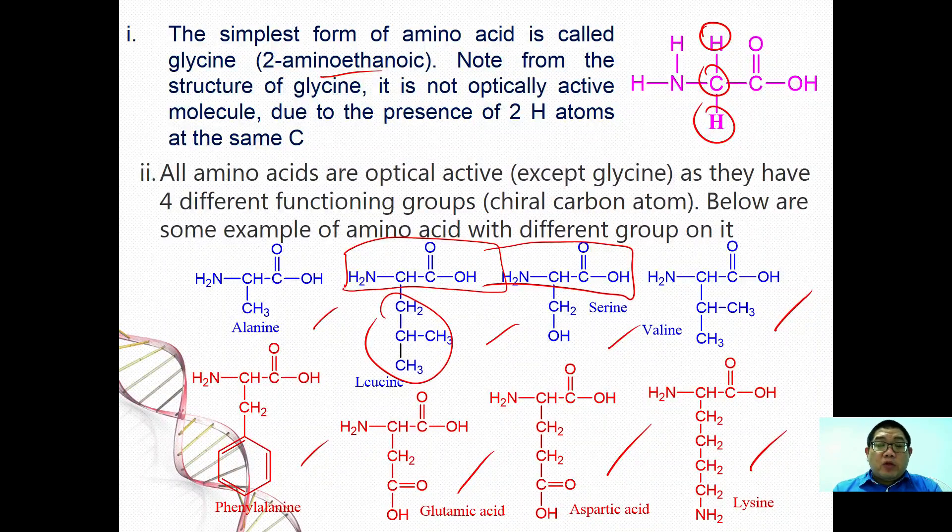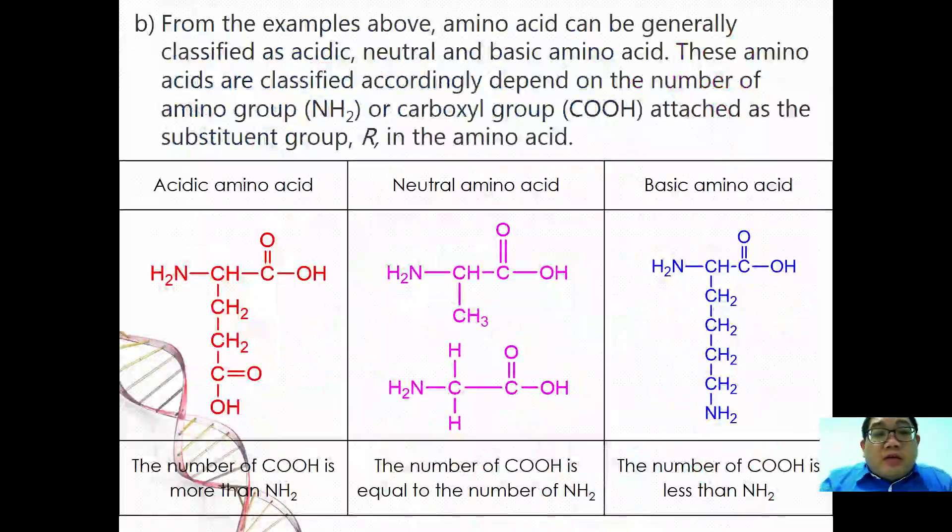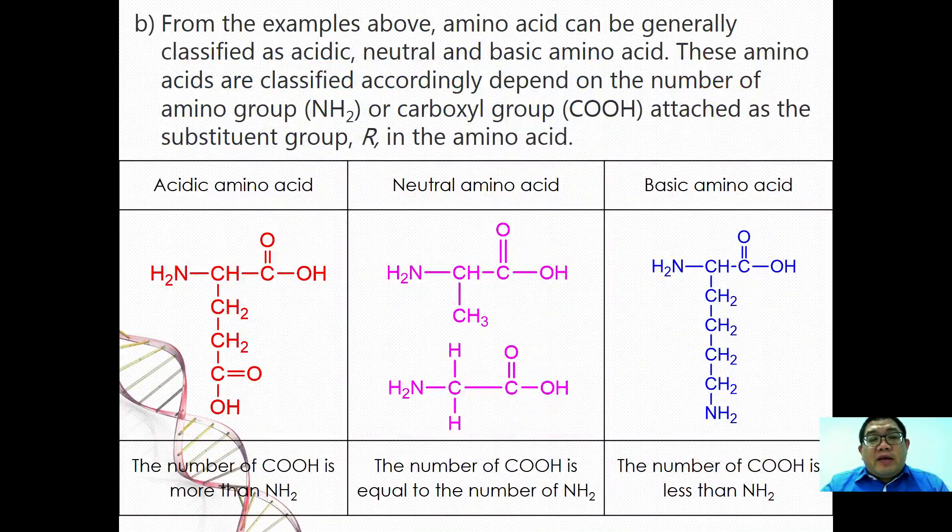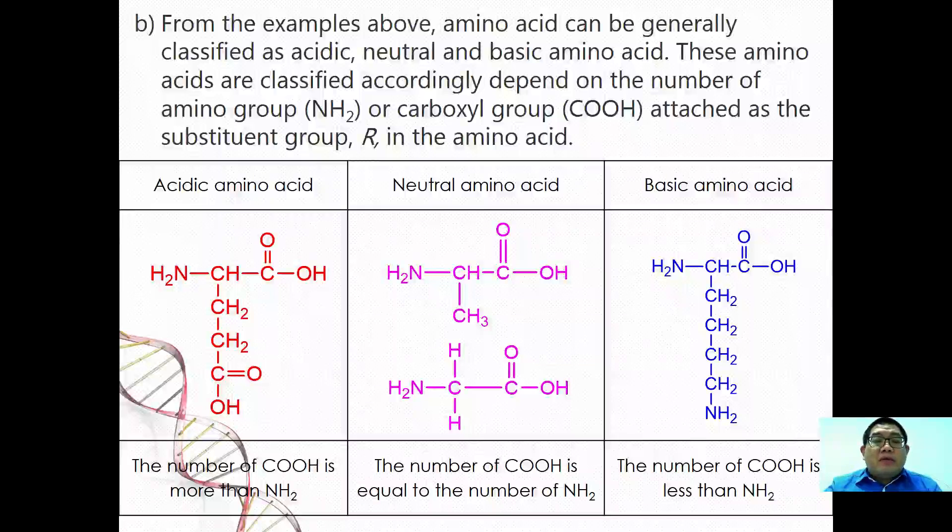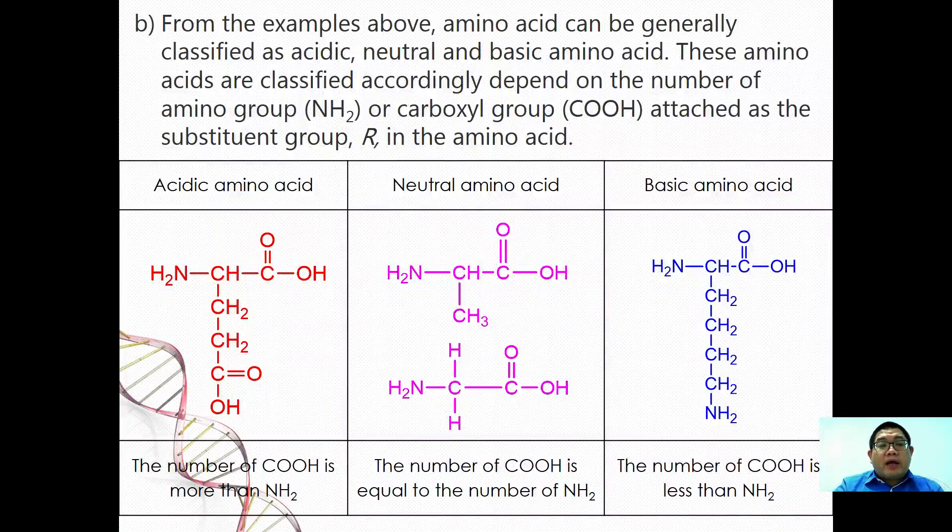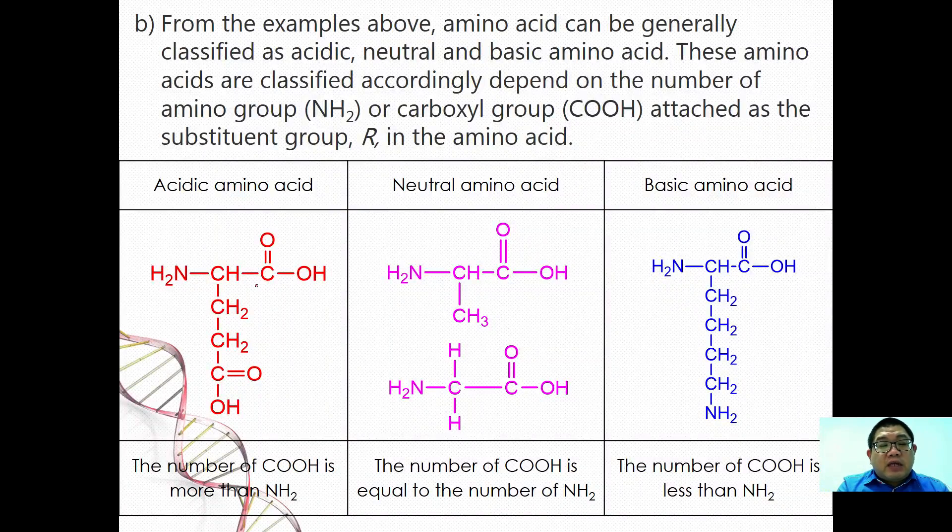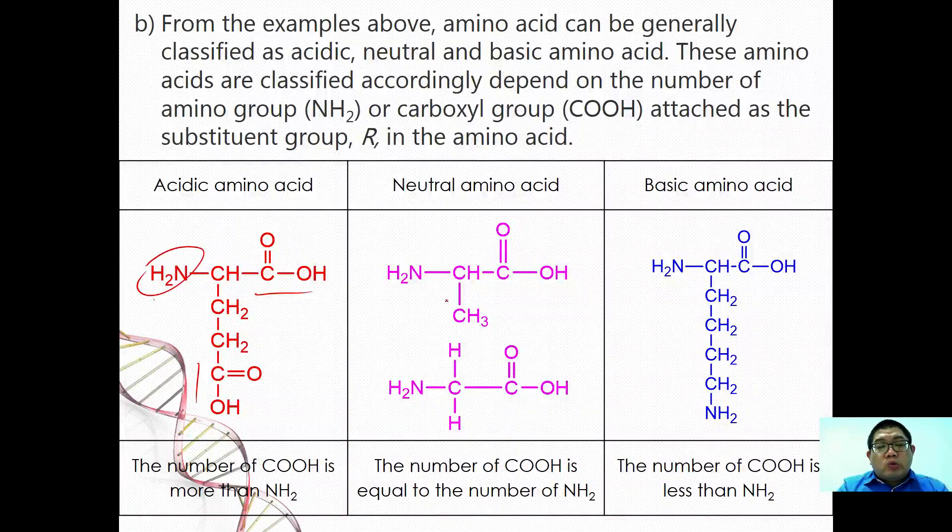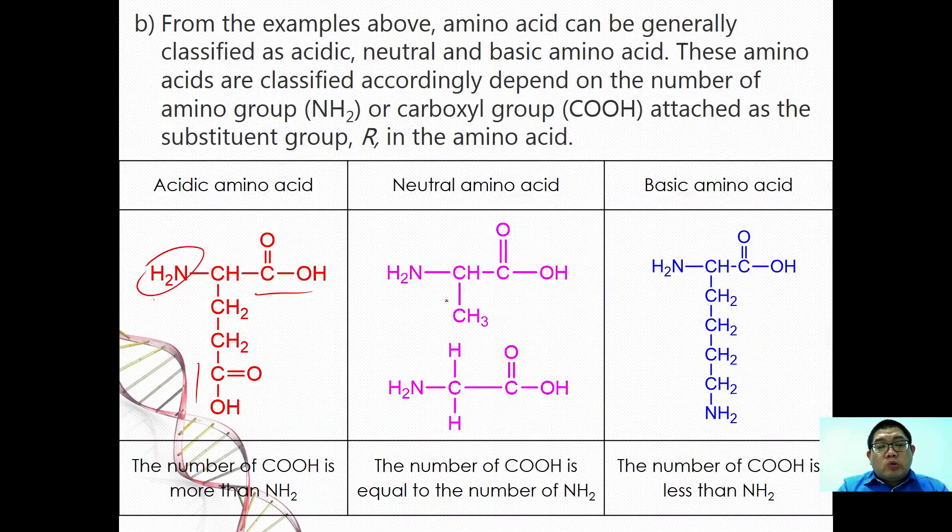From example above, amino acid can be generally classified as acidic, neutral, or basic amino acid. This amino acid are classified based on the number of NH2 group and also COOH group. Generally we have an acidic amino acid when you have more COOH compared to NH2, and then neutral if you have one NH2 and one COOH.